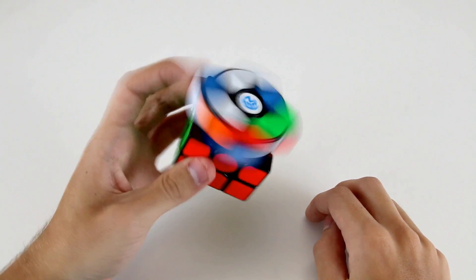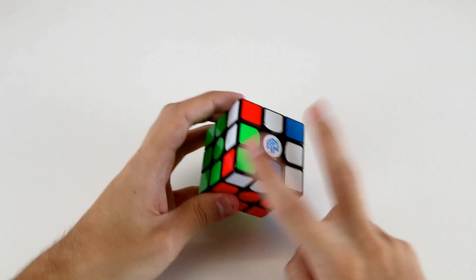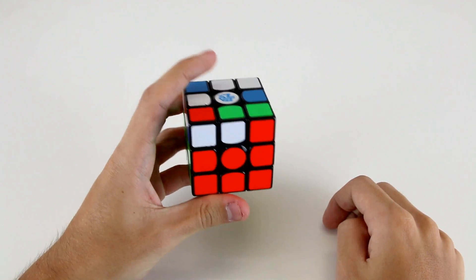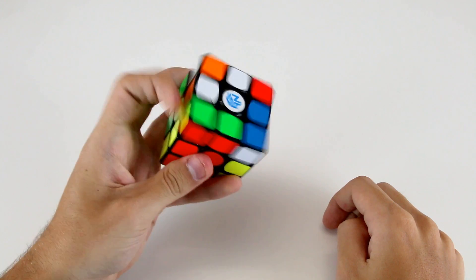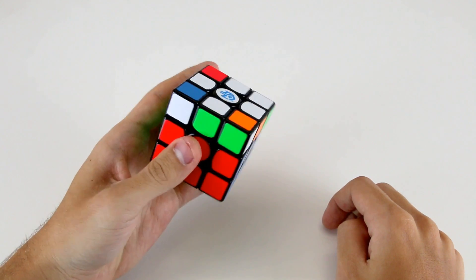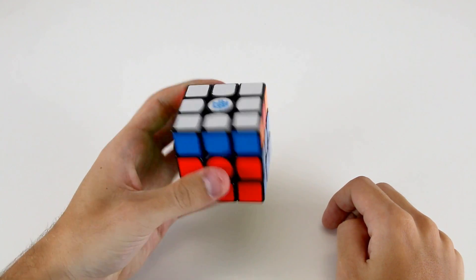Now I guess I see that I have a diagonal corner permutation, so what I'll probably do is do F, U, R, U prime, R prime, F prime to set up a Sune and then a U permutation.